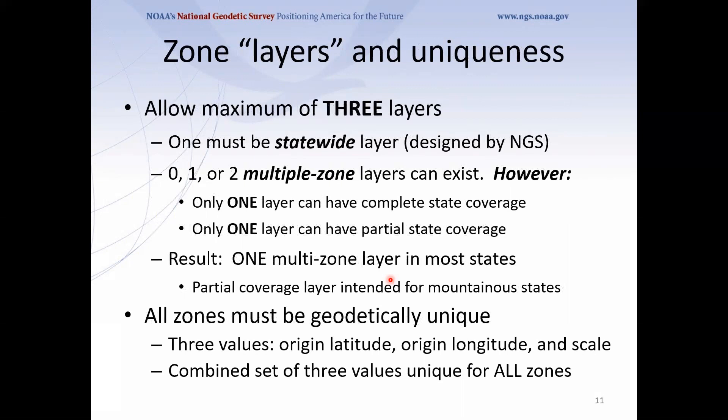The idea of having more than one projection in the same place is new — well, not totally new. There's already one state that has layers in state plane 83: Kentucky. Kentucky has a statewide zone adopted in 2001 and it became part of state plane, but they also have two Lambert Conformal Conic zones from the past. You can get state plane coordinates for either zone in that state — either the statewide zone or the two Lambert zones. We're doing the same thing but nationwide.